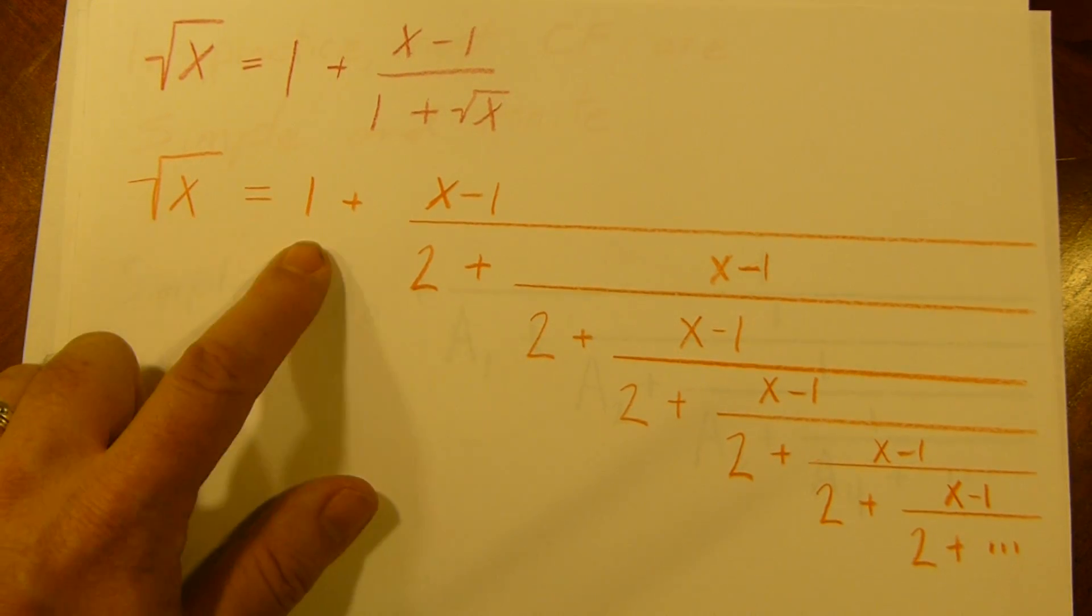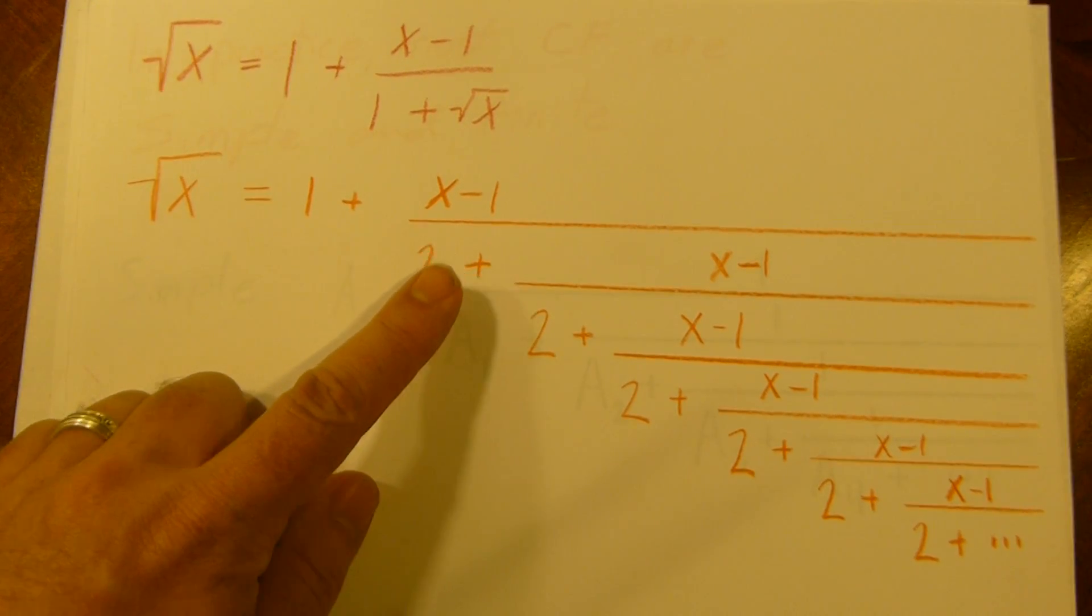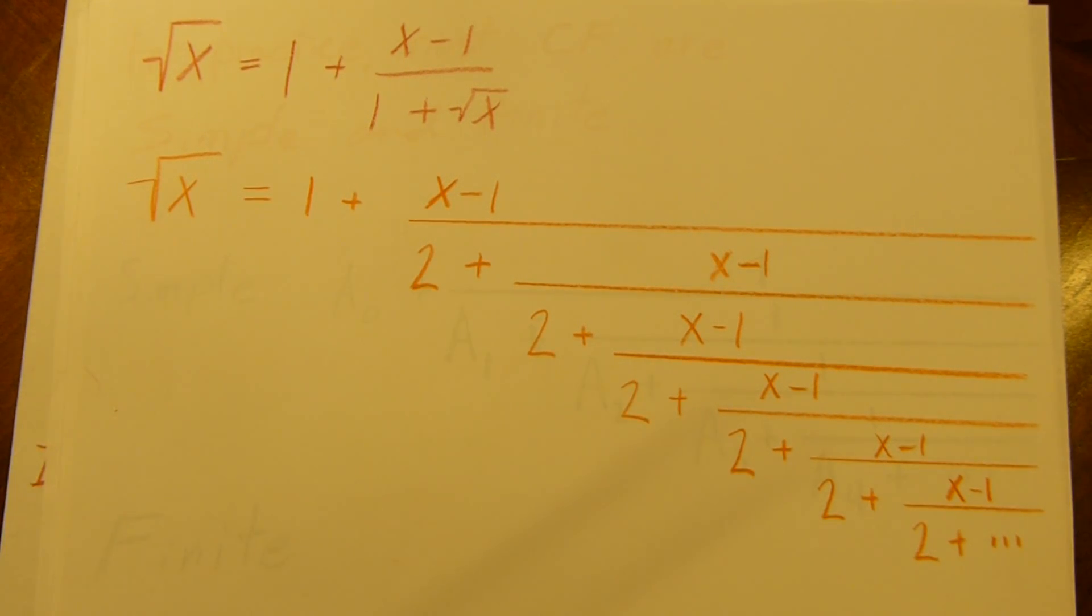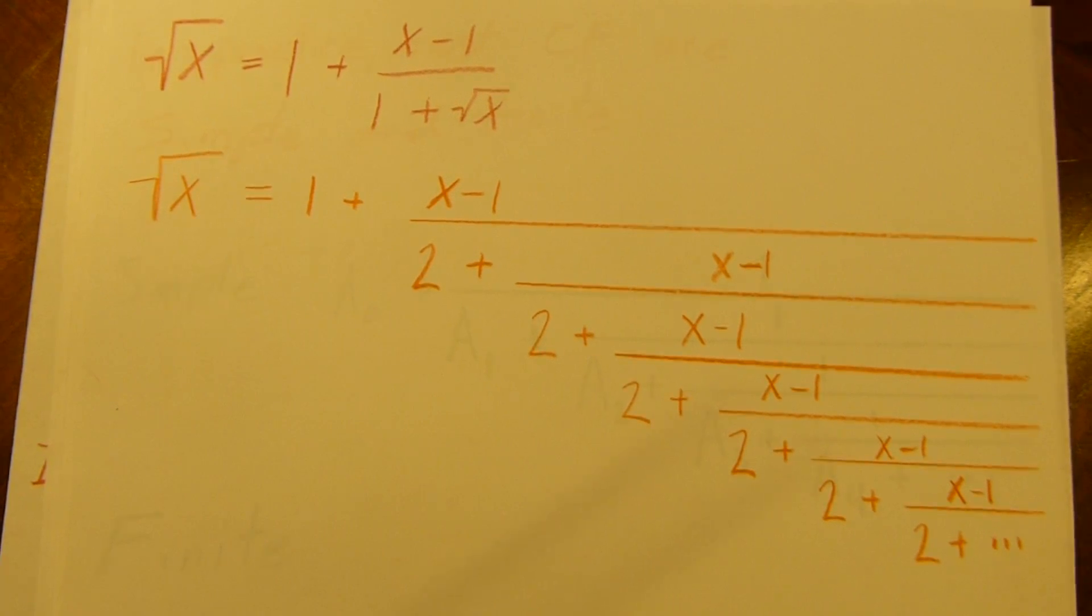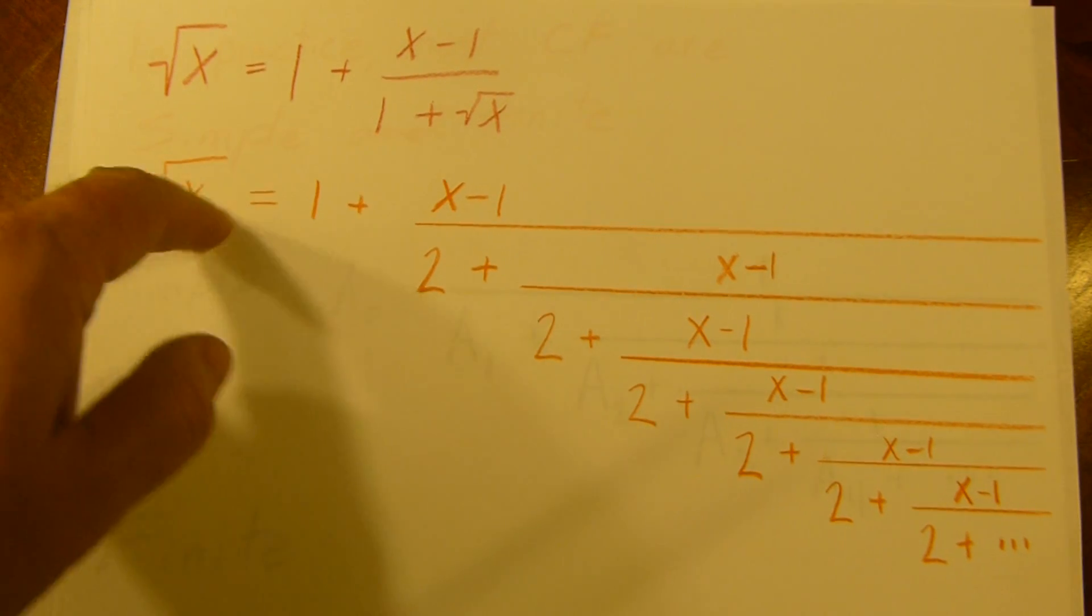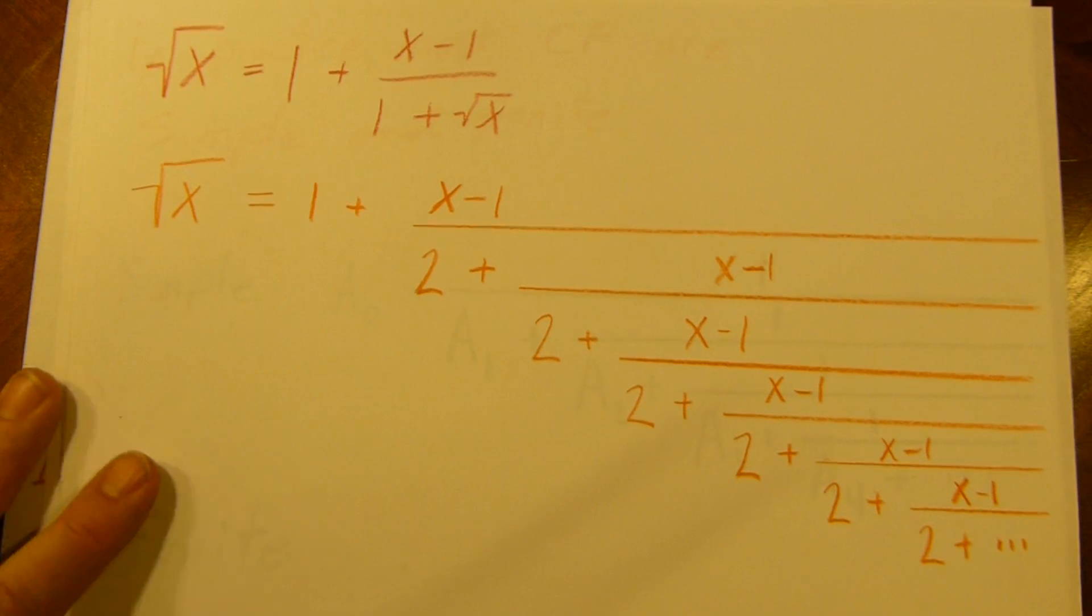Square root of x equals 1 plus (x-1) over 2 plus (x-1) over 2 plus blah blah blah. Which means that we can take this and we want to know what square root of 2 is? Set x equals 2 and solve.